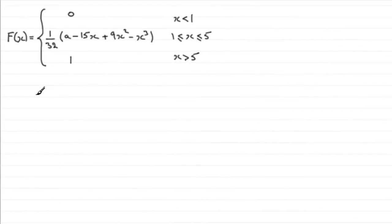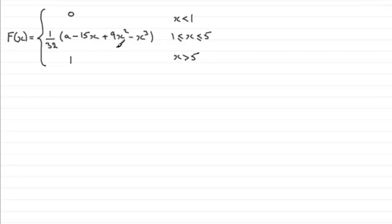For this particular part, I've copied down the cumulative distribution function F(x), and we've got to find out what the constant 'a' is. There are two ways that spring to mind. Remember that F(x) always gives us the probability of our random variable X being less than or equal to the observed value x.